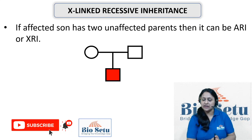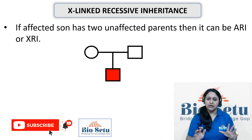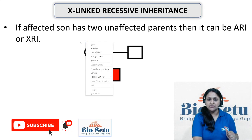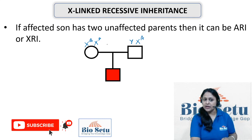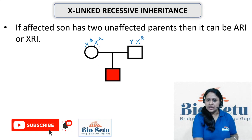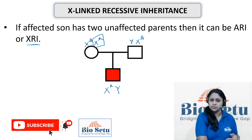The last point of X-Linked recessive inheritance is: if an affected son has two unaffected parents, it can be either autosomal recessive inheritance or X-Linked recessive inheritance. In X-Linked recessive, the mother would be a carrier — heterozygous — with one dominant and one recessive X-Chromosome, and the father has a dominant X-Chromosome and a Y-Chromosome. When the mother gives the recessive X-Chromosome to the son, the son becomes affected. So yes, this is a possibility in X-Linked recessive.